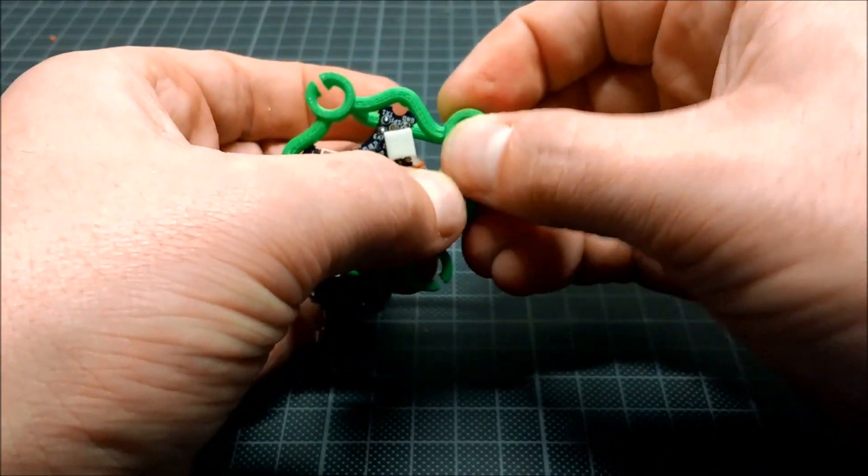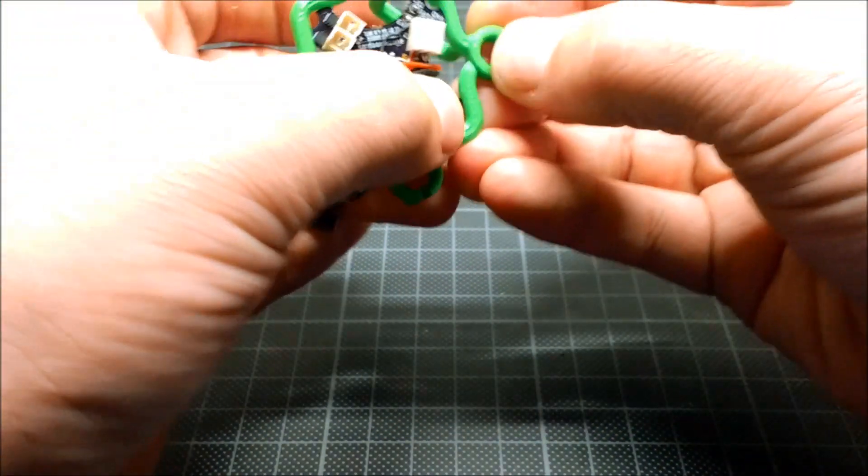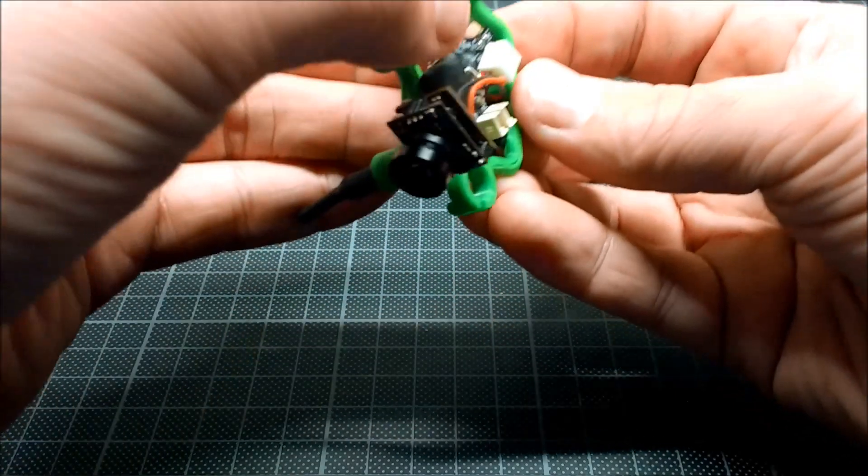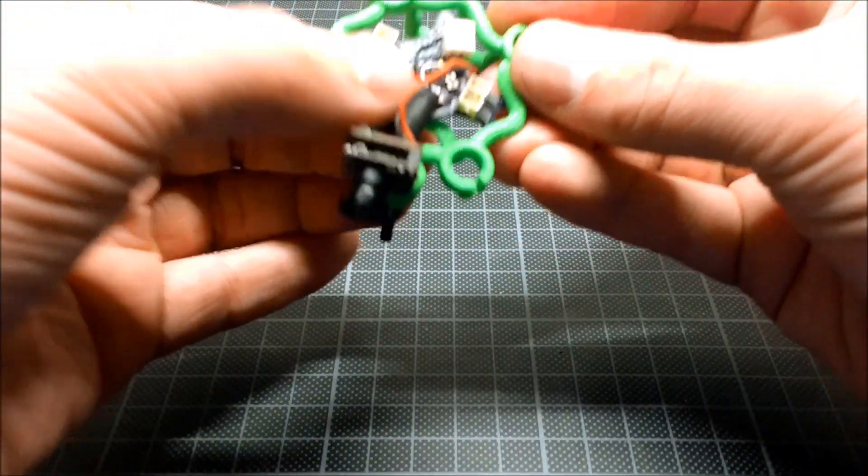The mainboard is mounted without screws. It snaps in place and stays there. I have decided to direct mount the battery connector to the board since my batteries have wires already on them.